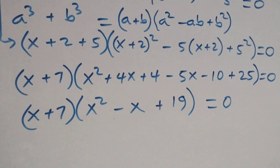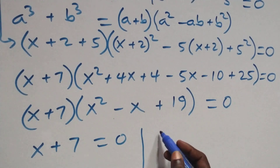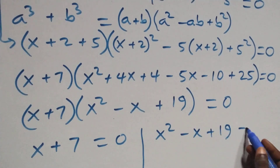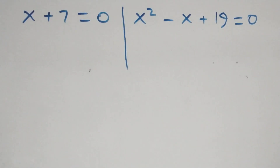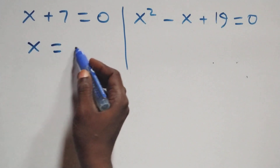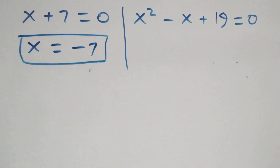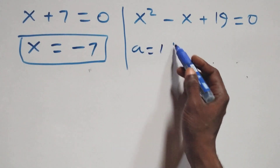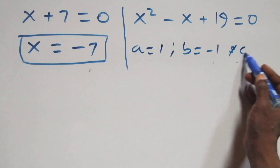Then we have two possible cases: x + 7 = 0, or x² − x + 19 = 0. From the first case, x = −7, which is a real solution. For the quadratic, a = 1, b = −1, and c = 19.